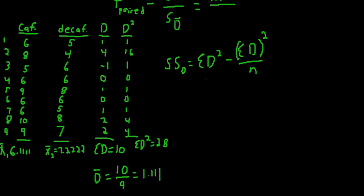So we already have the left-hand side of the equation, which is 28. And the right-hand side, we have to take sum of d and square it so that's 10 squared over n,